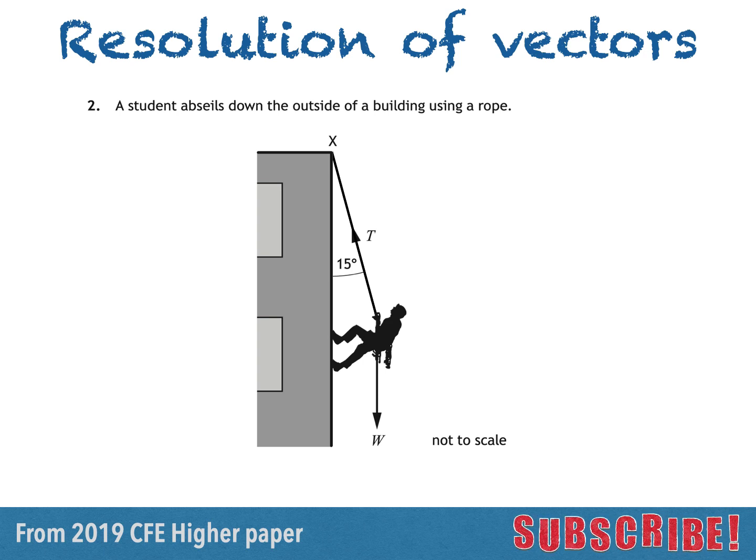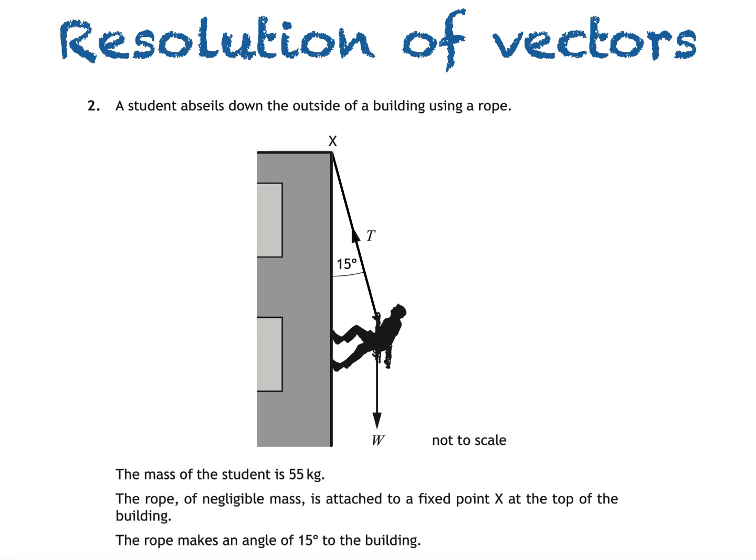This is a question from the 2019 CFE Hire paper. A student abseils down the outside of a building using a rope. The mass of the student is 55 kilograms. The rope of negligible mass is attached to a fixed point x at the top of the building. The rope makes an angle of 15 degrees to the building.